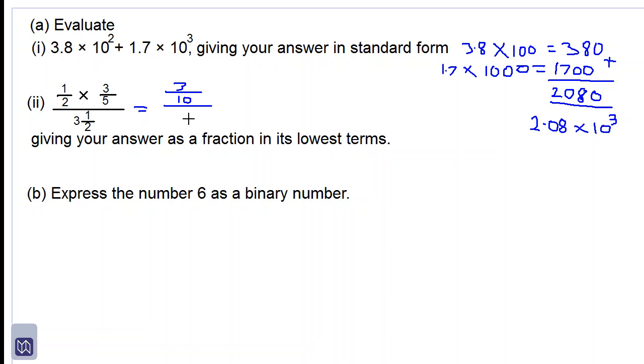Let's change 3½ to an improper fraction. 2 times 3 is 6 and 1 is 7 over 2. So we now have 3/10 divided by 7/2. So it's 3/10 multiplied by the inverse of 7/2.